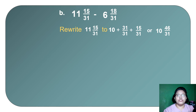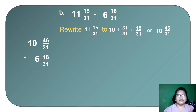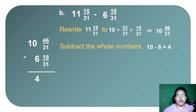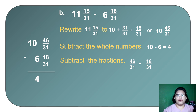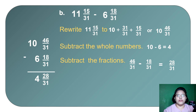Now subtract vertically: 10 and 52/37 minus 6 and 18/37. Subtract whole numbers: 10 minus 6 equals 4. Subtract fractions: 52/37 minus 18/37 equals 28/37. Final answer is 4 and 28/37. We cannot simplify further since 28 and 37 share no common divisor.